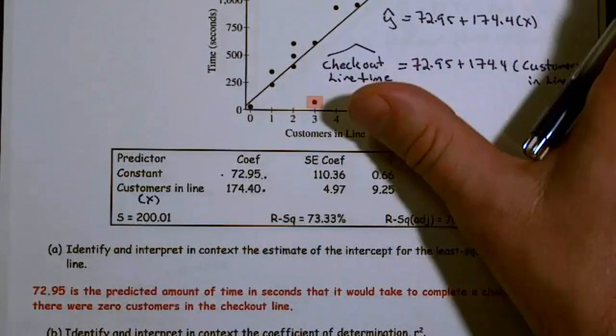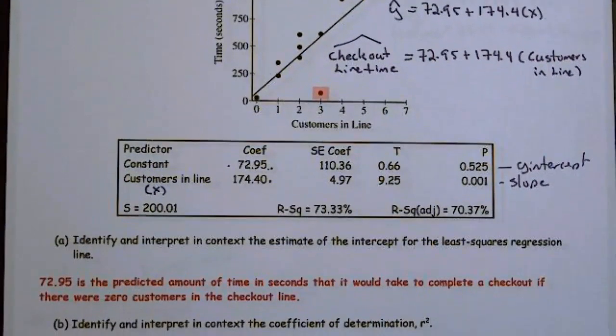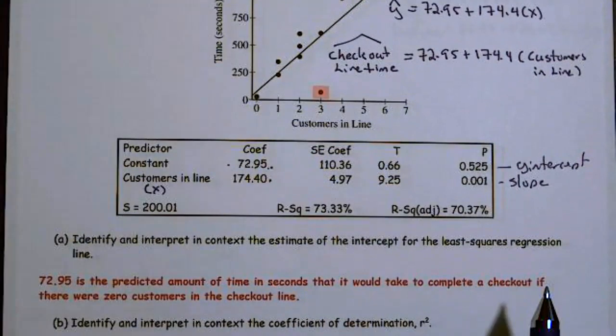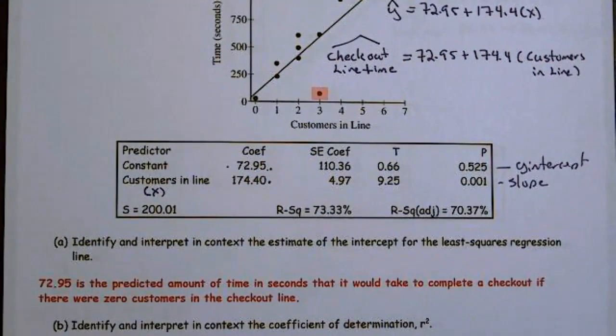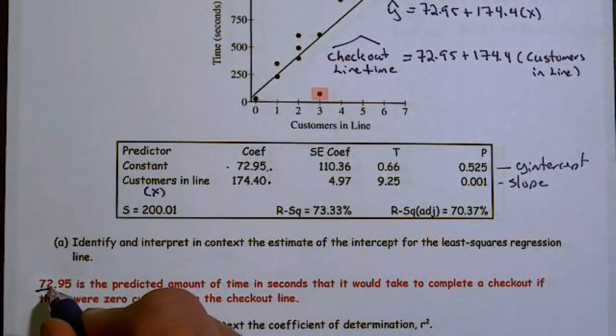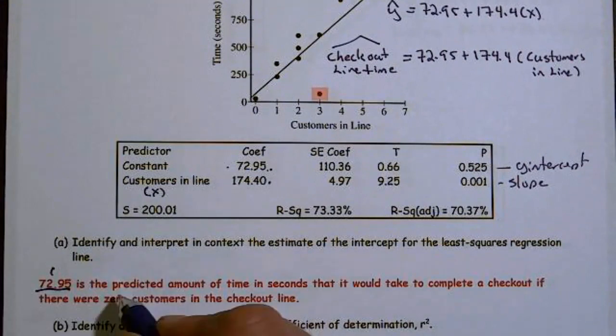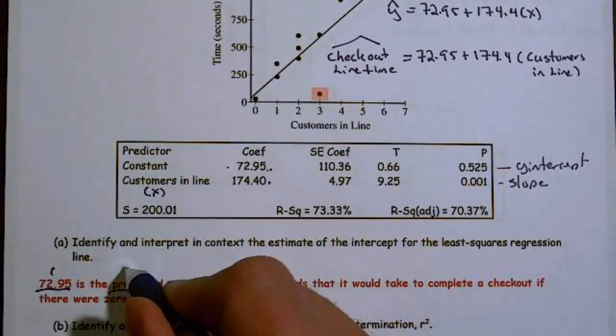So, identify and interpret in context the estimate of the intercept for the least squares regression line. Well, 72.95 is the predicted amount of time in seconds that it would take to complete a checkout if there were zero customers in line.